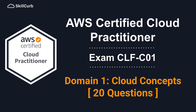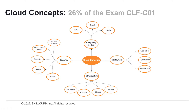Hi everyone. In this four-part video series, we will test your skills that will help you pass the AWS Certified Cloud Practitioner exam in the year 2022. We will focus on the cloud concepts domain in this video. As you can see from the visual, there are four key categories: infrastructure, computing models, benefits of cloud computing, and deployment styles. Together, this covers the content that you'll be tested on for this domain, which is 26% of the exam.